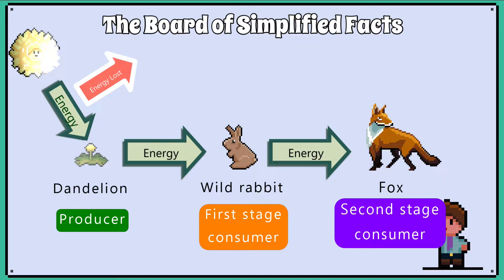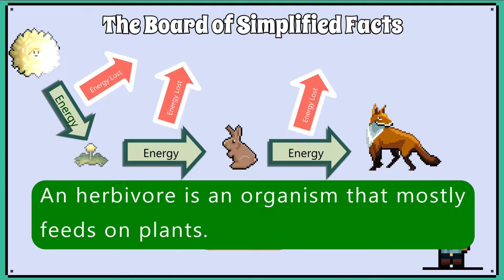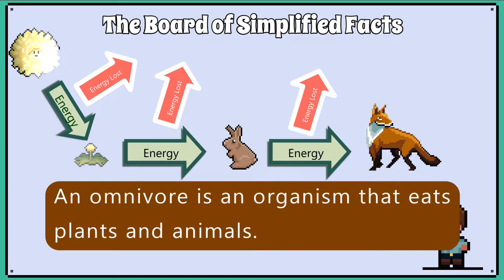As we move up the food chain, energy is lost, and not all the energy is transferred from organism to organism. The first stage consumer is either a herbivore or an omnivore. Herbivores mainly feed on plant matter, and omnivores can feed on both plant and animal matter.